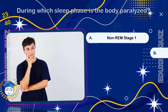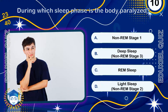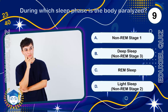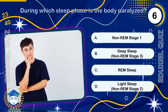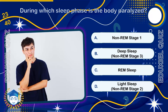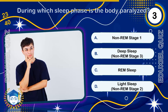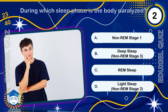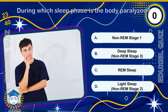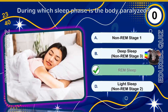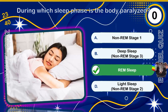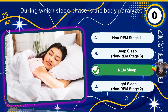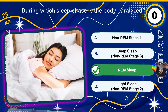During which sleep phase is the body paralyzed? REM sleep. During rapid eye movement (REM) sleep, the brain actively sends signals that temporarily paralyze the major voluntary muscles.